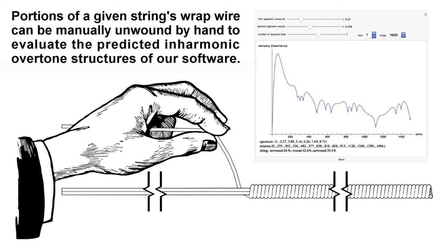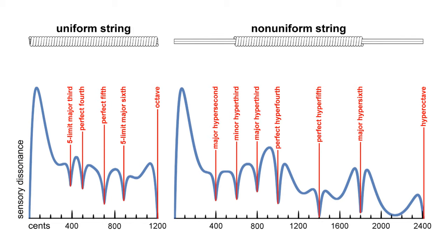We looked at and listened to many possibilities, and ultimately picked one that generates a dissonance curve that has the same basic shape as the dissonance curve for the harmonic string.